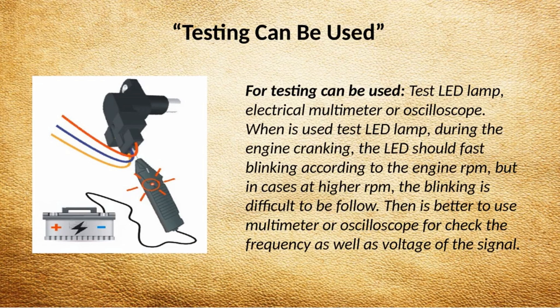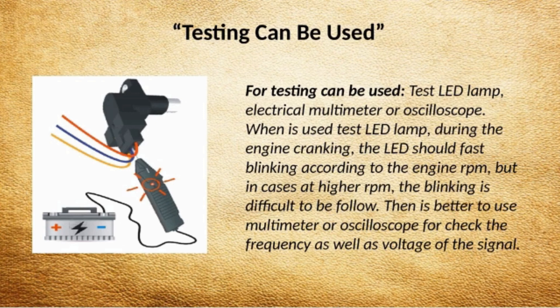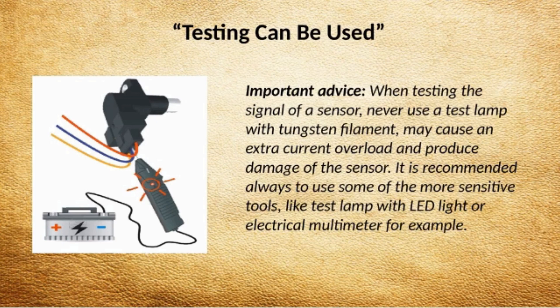For testing can be used: a test LED lamp, electrical multimeter, or oscilloscope. When a test LED lamp is used, during engine cranking the LED should blink fast according to the engine RPM, but at higher RPM the blinking is difficult to follow. It is then better to use a multimeter or oscilloscope to check the frequency as well as voltage of the signal. Important advice: when testing the signal of a sensor, never use a test lamp with a tungsten filament, as it may cause an extra current overload and produce damage to the sensor. It is recommended to always use more sensitive tools, like a test lamp with LED light or an electrical multimeter.